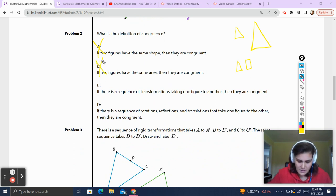If there is a sequence of transformations taking one figure to another, then they are congruent. We just saw a transformation that shrunk a triangle. So that's a sequence of transformations that bring one shape to another, but that doesn't guarantee that they are congruent.